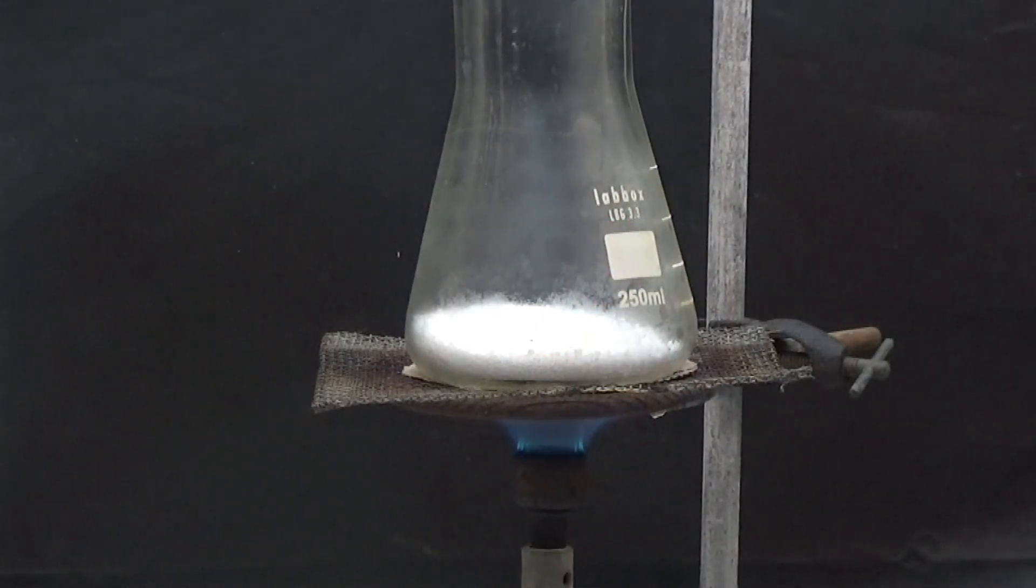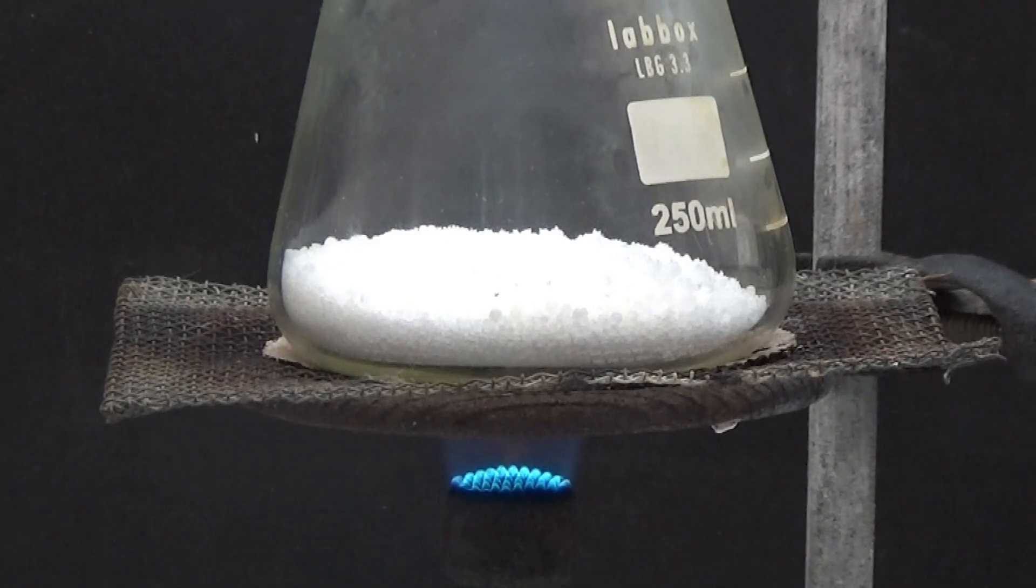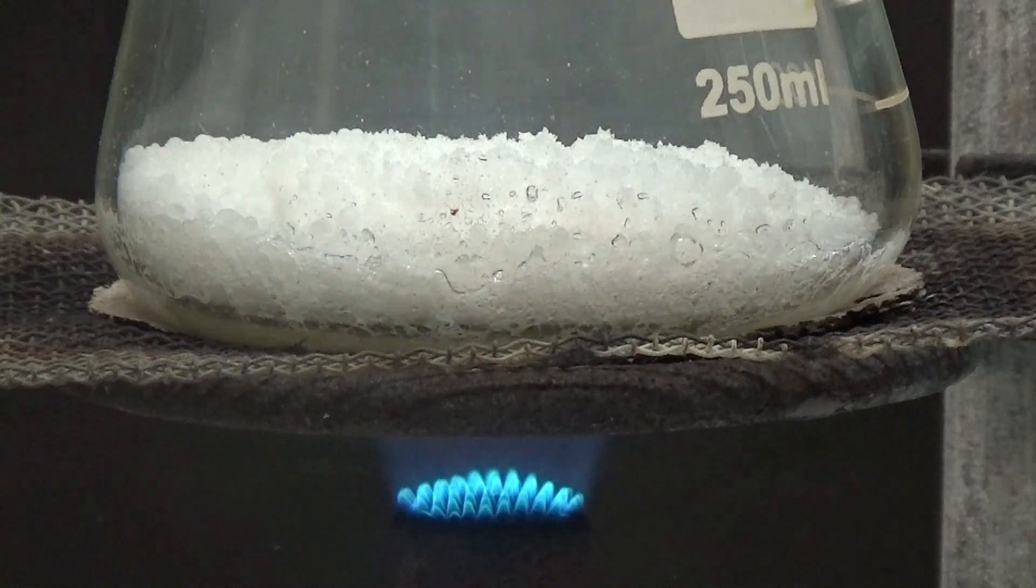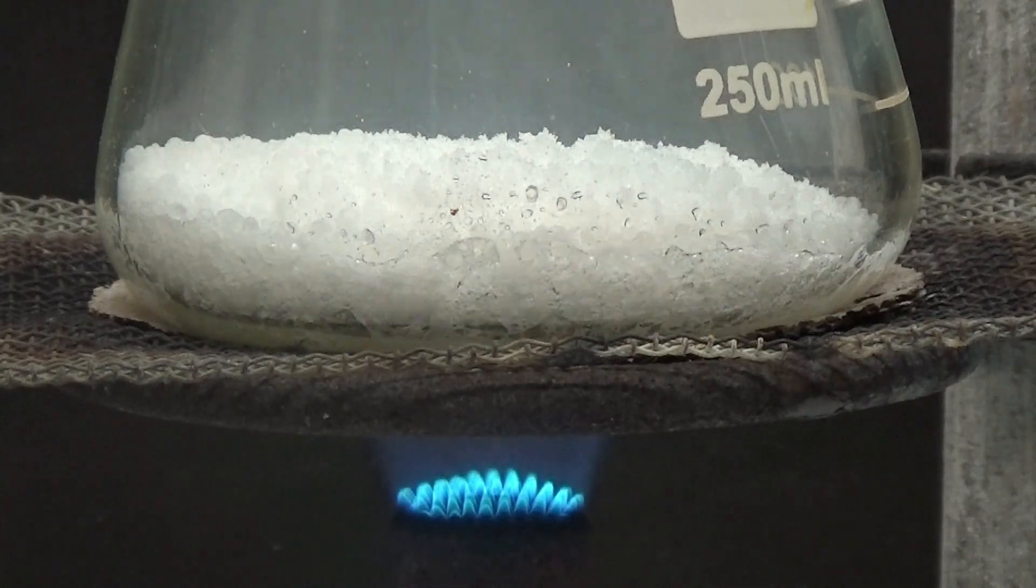Put the mixture in a 250 milliliter thick glass flask. We protect the flask with an asbestos mesh and heat it with a gas burner. First heat gently and increase the heat until the mixture melts.